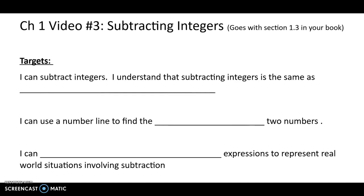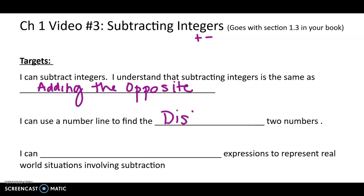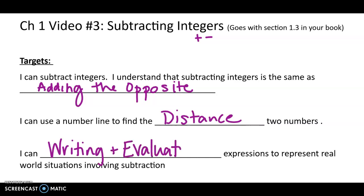This is video 3 for chapter 1, subtracting integers. Remember integers — positive and negative numbers — how do we get the answer when we're subtracting them? I can subtract integers. I understand that subtracting integers is going to be the same as adding the opposite. I can use a number line to find the distance between two numbers. In this section we will also be writing and evaluating — setting up and working out, getting an answer when we have real-world situations or story problems with subtraction. Write those down.